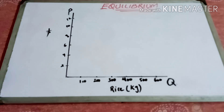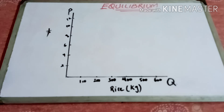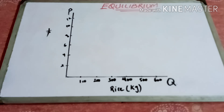Basically, the equilibrium is the interaction of demand and supply which determines the equilibrium price. Whenever demand and supply come together in an exchange and agree upon a certain price, and at that price they agree to deliver a certain quantity, that point is called the equilibrium point. The quantity bought at that equilibrium price is called the equilibrium quantity.